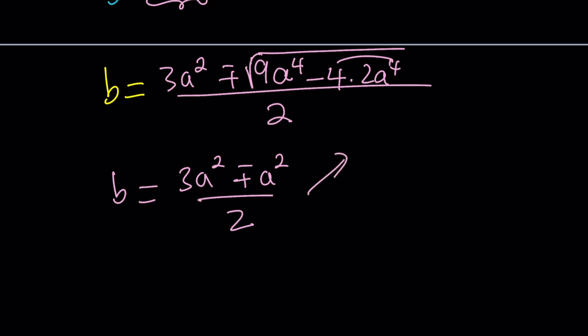If you add them, 4a squared divided by 2, that's going to give you 2a squared. If you subtract them and divide by 2, that's going to give you a squared. Awesome. So now we got b in terms of a.